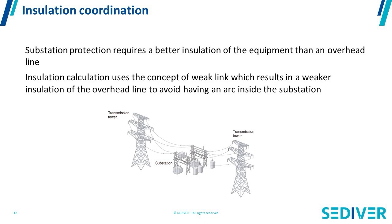What does that mean? When you build a line, at some place you have generation — a dam, a nuclear power plant, whatever — and then you have the line and you have substations with transformers, circuit breakers, big equipment. If you look at how much money is involved in a transmission power line, clearly the biggest money is in the substation. You have expensive transformers and lots of equipment that cost a lot of money and needs to be protected.